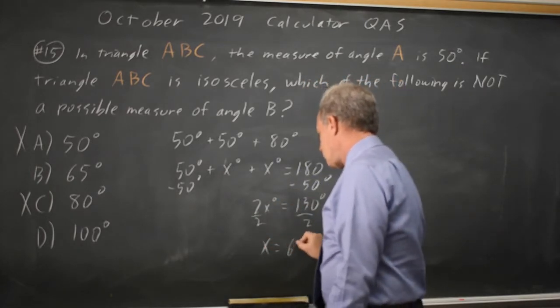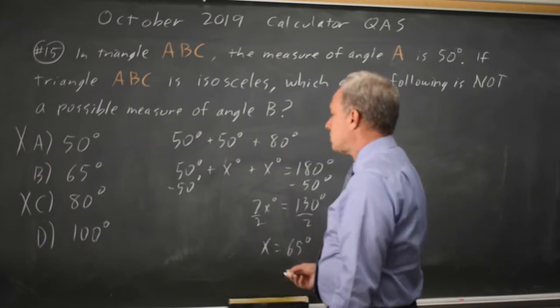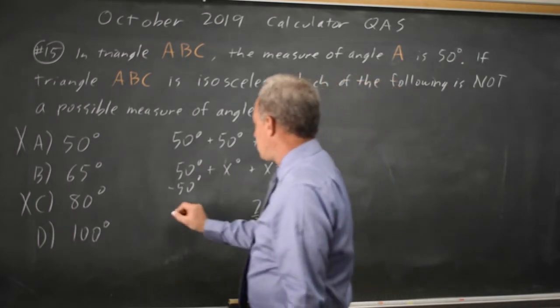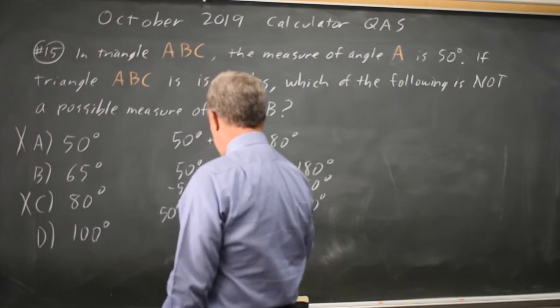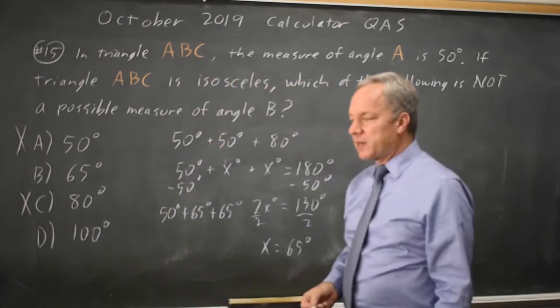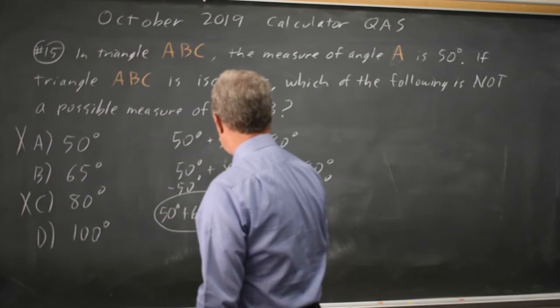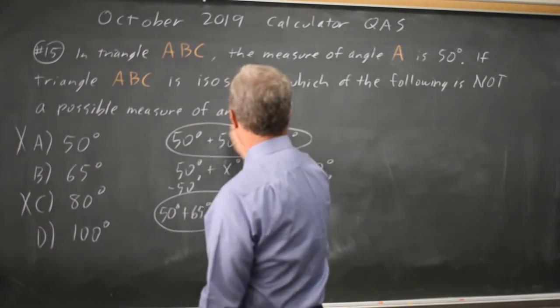I get x plus x is 2x degrees equals 130 degrees. If I divide both sides by 2, I get x equals 65 degrees. So that would be 50 degrees plus 65 degrees, those add up to 180,